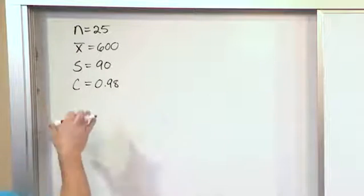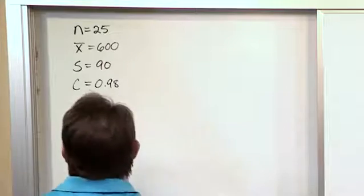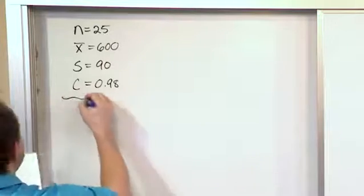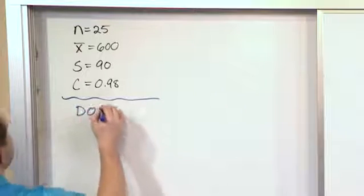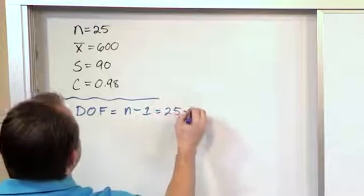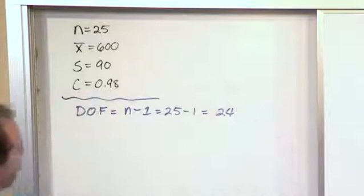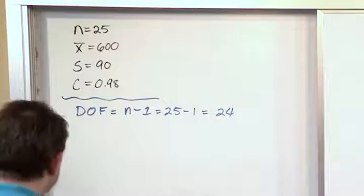So this is all the raw data here, and we want to find that margin of error. So the first thing we want to do is say, well, the degree of freedom is just equal to n minus 1, which is 25 minus 1, which is 24. That's going to be helpful whenever we look up the t value in the table. We have to know the degrees of freedom.